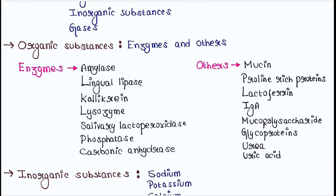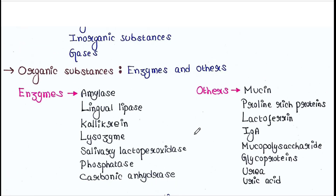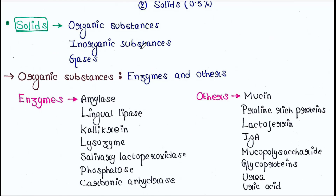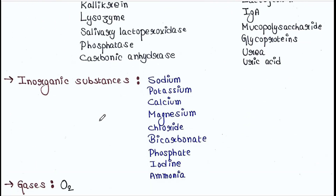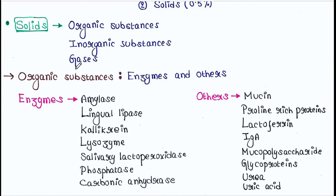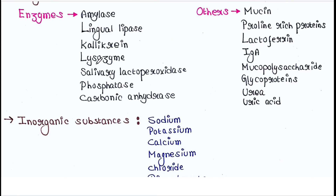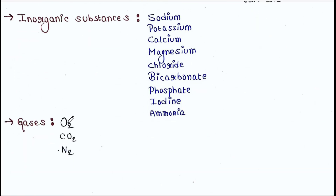Let's talk about inorganic substances. Inorganic substances include sodium, potassium, calcium, magnesium, chloride, bicarbonate, phosphate, iodine, and ammonia. Let's talk about gases. Gases include oxygen, carbon dioxide, and nitrogen.